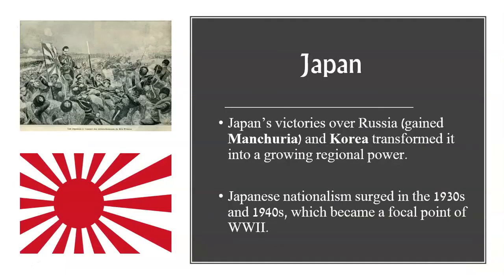This is stuff we'll learn next unit — Japan's victories over Russia, gaining Manchuria in the 1900s, and fighting with Korea as they became a regional power. They surged with nationalism in the 1930s and 40s, and that becomes a focal point of World War II. Nationalism getting a little ugly.